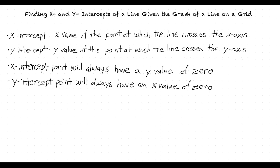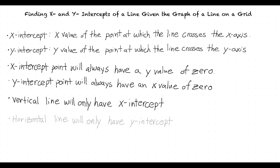Any given line will have an x and y intercept as long as it has a slope greater than 0. A vertical line will only have an x intercept, and a horizontal line will only have a y intercept.